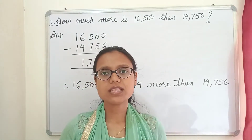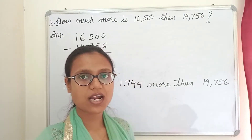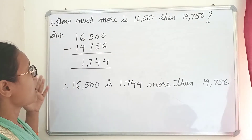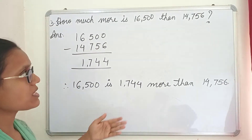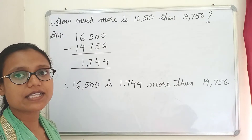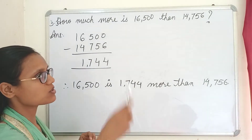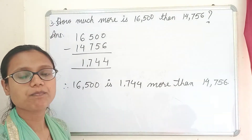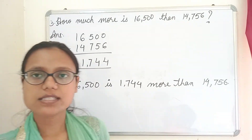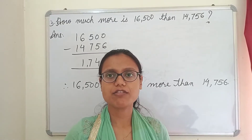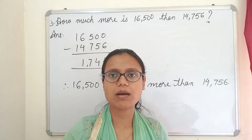Now the third question: how much more is sixteen thousand five hundred than fourteen thousand seven hundred fifty-six? We compare 16,500 and 14,756.